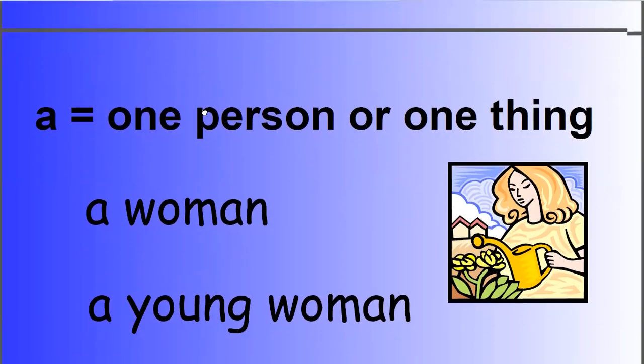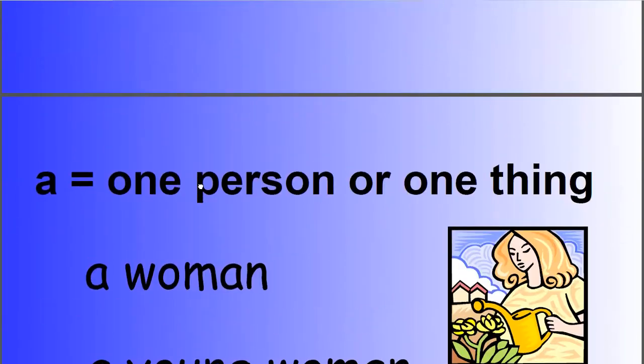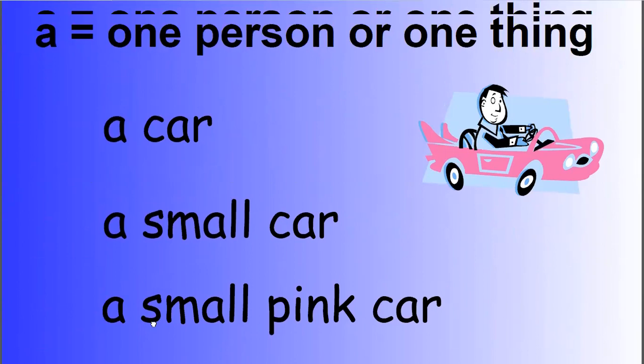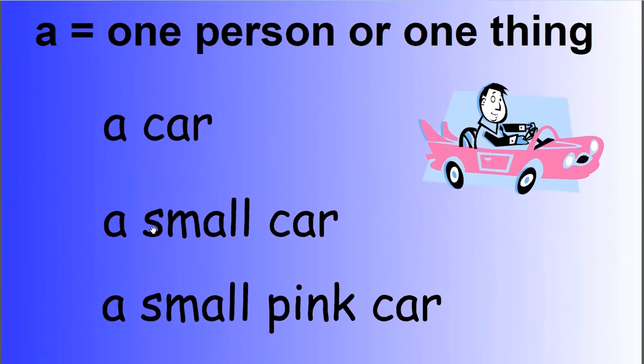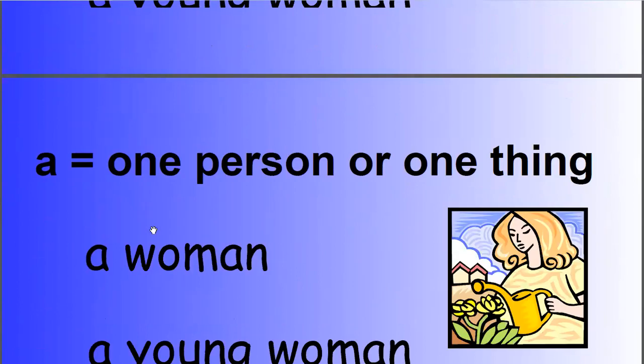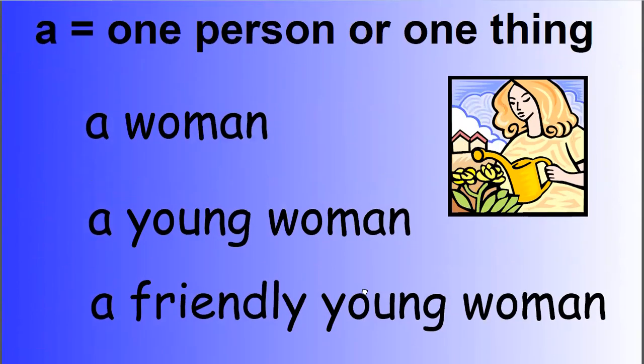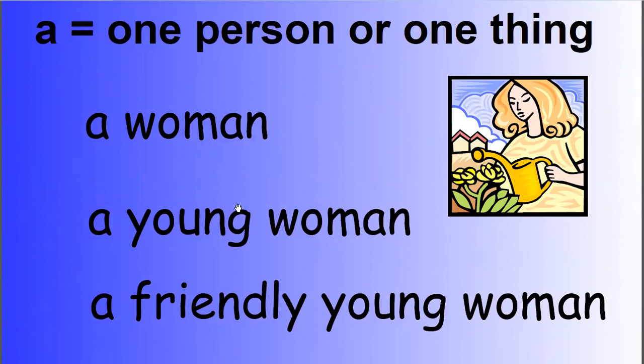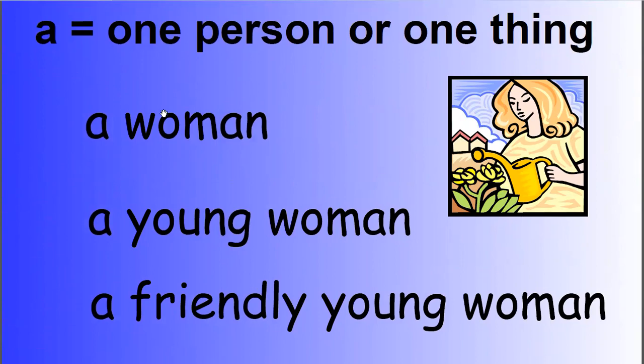A means one person or one thing. We use a for one person or a thing. A car, a small car, a small pink car. A woman, a young woman, a friendly young woman. We use a for one person or one thing.